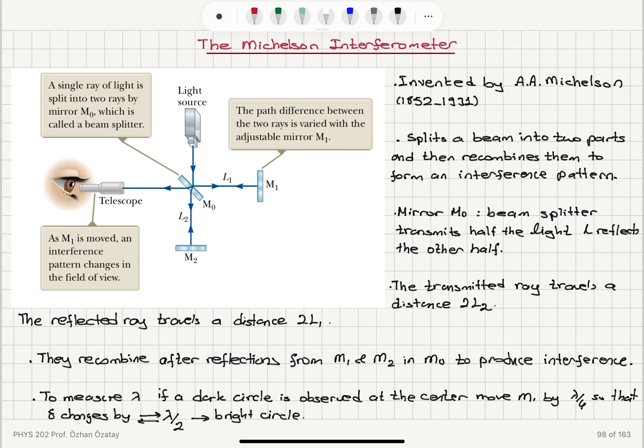So in order to measure the wavelength, if we see a dark circle at this point by looking at it in the telescope, if we move M1 by lambda over 4, the path difference will change by twice that because we have 2L1 distance traveled. So it's going to be lambda over 2 change. The dark circle will turn into a bright circle when we look at it in the telescope.